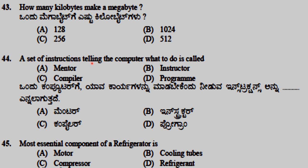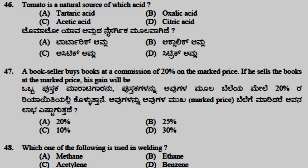A set of instructions telling the computer what to do is called a program. The most essential component of a refrigerator is the compressor. Tomato is a natural source of oxalic acid.